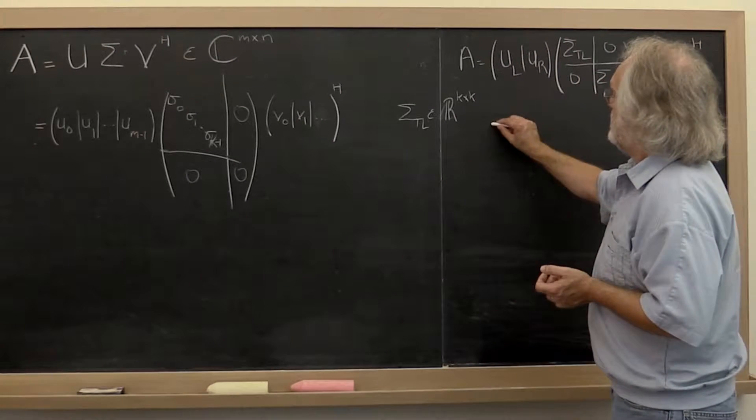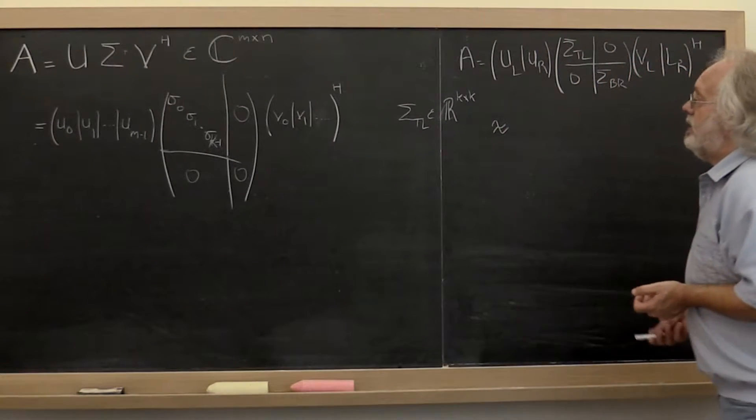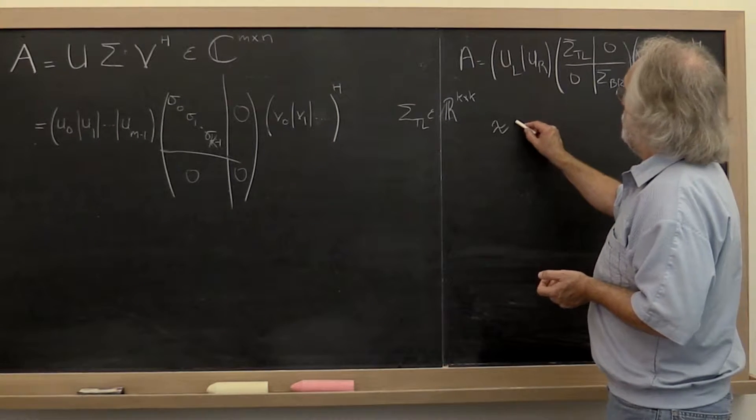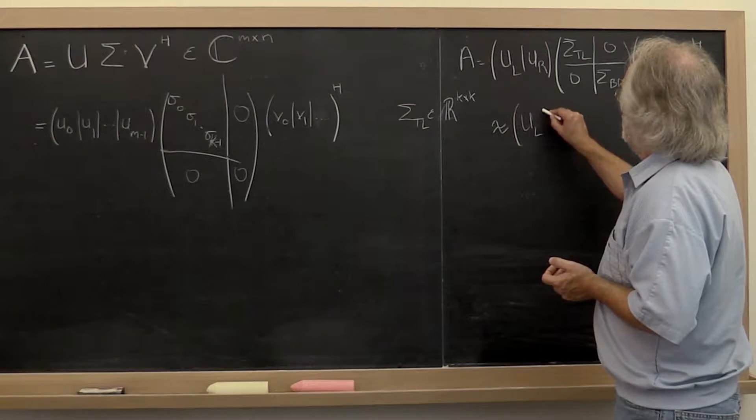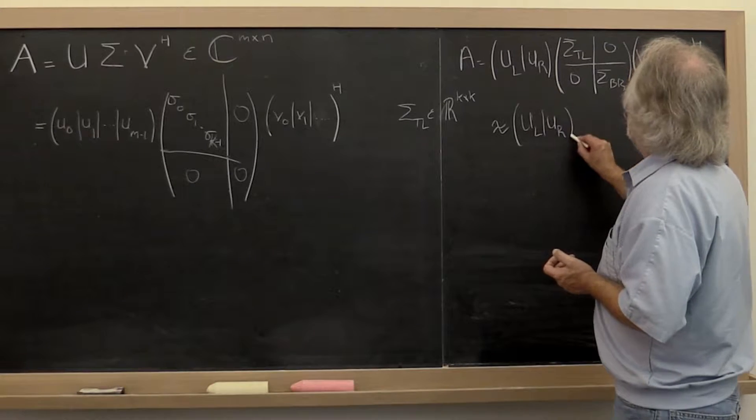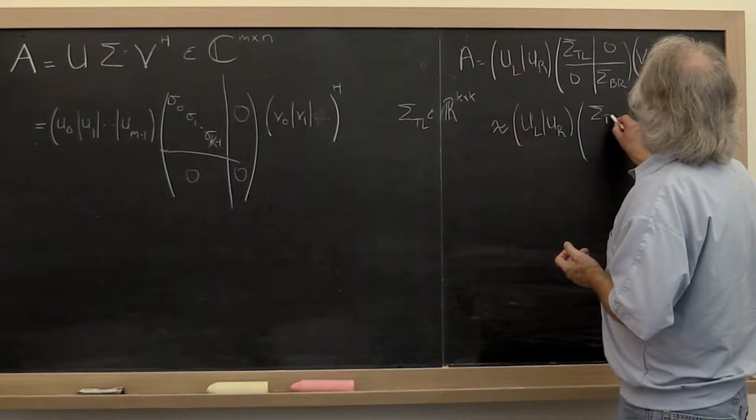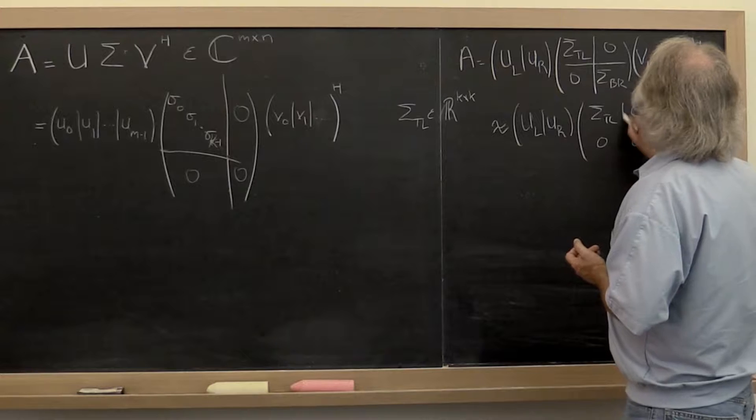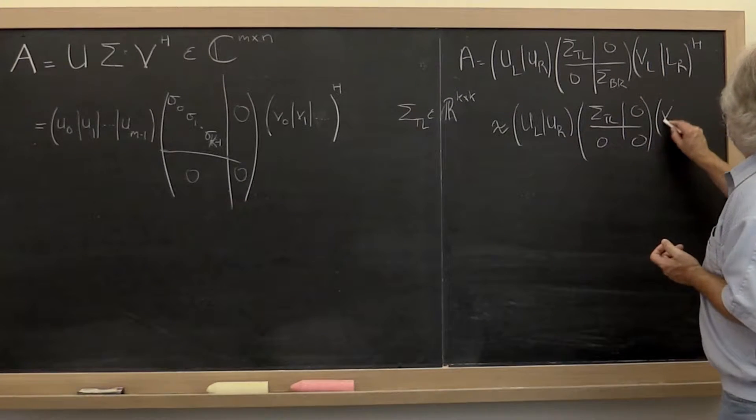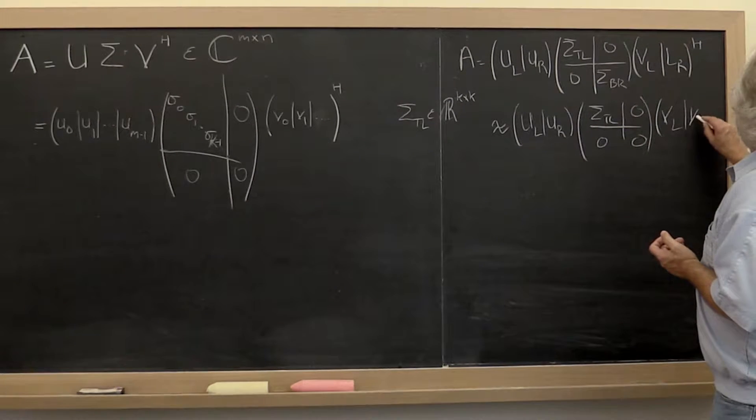Then we can say that A is approximately equal to U left, U right, times sigma top left, zero, zero, zero, V left, V right, Hermitian...